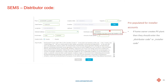If you do have a dealer code, your dealer code should already be pre-populated in this field. If the end user has already created their own SEMS account, you can ask them to enter your dealer code into this field so that you can also view the PV system.